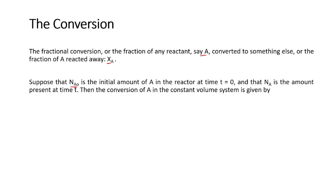Suppose na0 is the initial number of moles in the reactor at time t = 0, and na is the final number of moles of A at time t. Then the conversion is given as xa = (na0 - na) / na0. The numerator na0 - na represents how much of species A has been converted, and dividing by na0 gives the conversion xa.